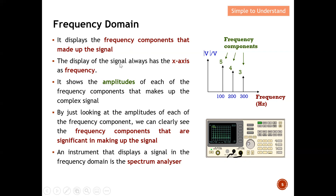The display of the signal always has the x-axis as frequency — which means the x-axis for frequency domain is always frequency. Each bar shows the amplitude of each frequency component that makes up the complex signal. The absolute amplitude of each frequency component is shown here. Complex means that there are more than one frequency component — when there are more than one frequency component, we call this a complex signal.